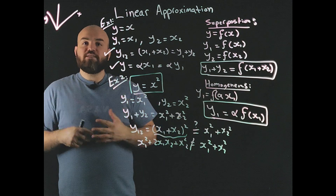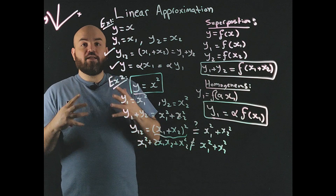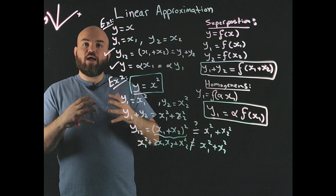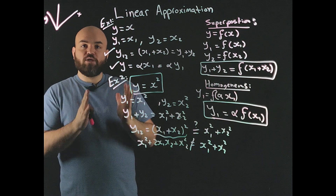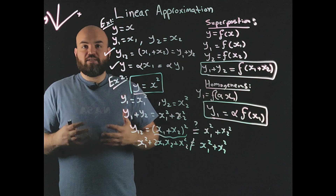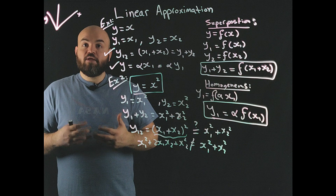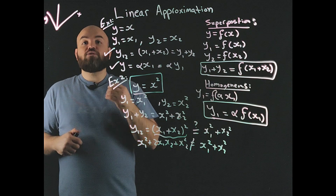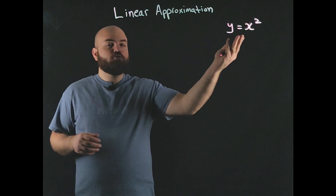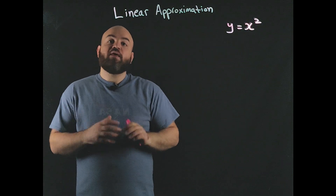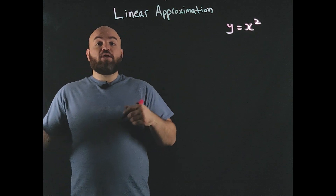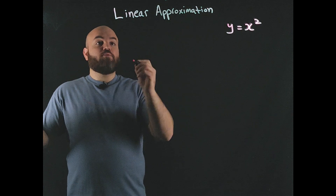Unfortunately, a lot of systems in the real world are nonlinear. However, if you look at an operating region around some certain point, you could approximate the system as linear. The way to do that is to use the Taylor series expansion. In our example, y = x squared is nonlinear, but we can linearize it using the Taylor series expansion around a chosen point.